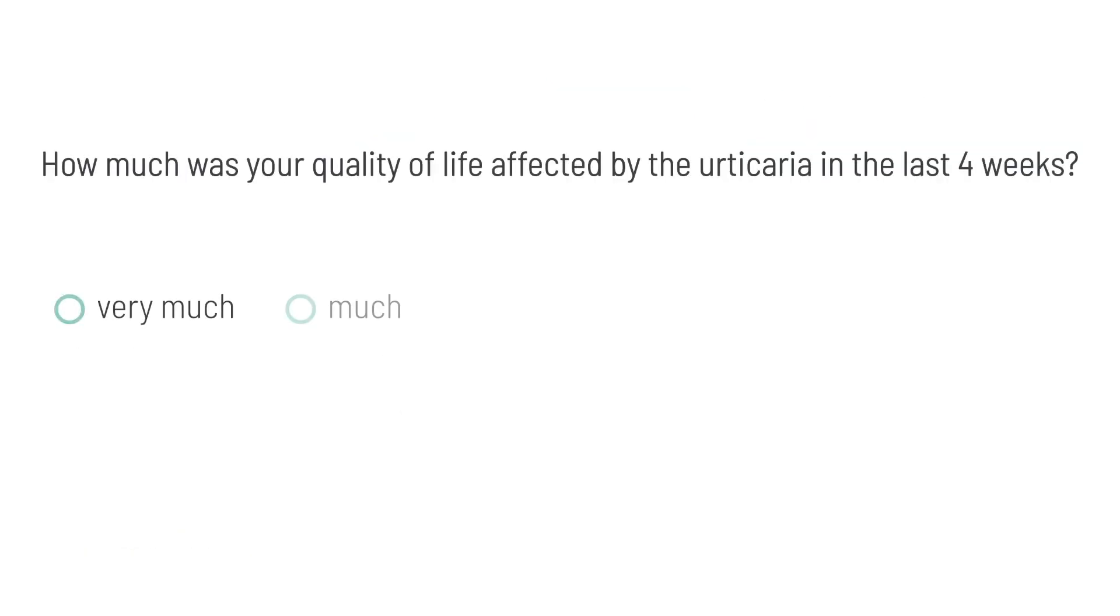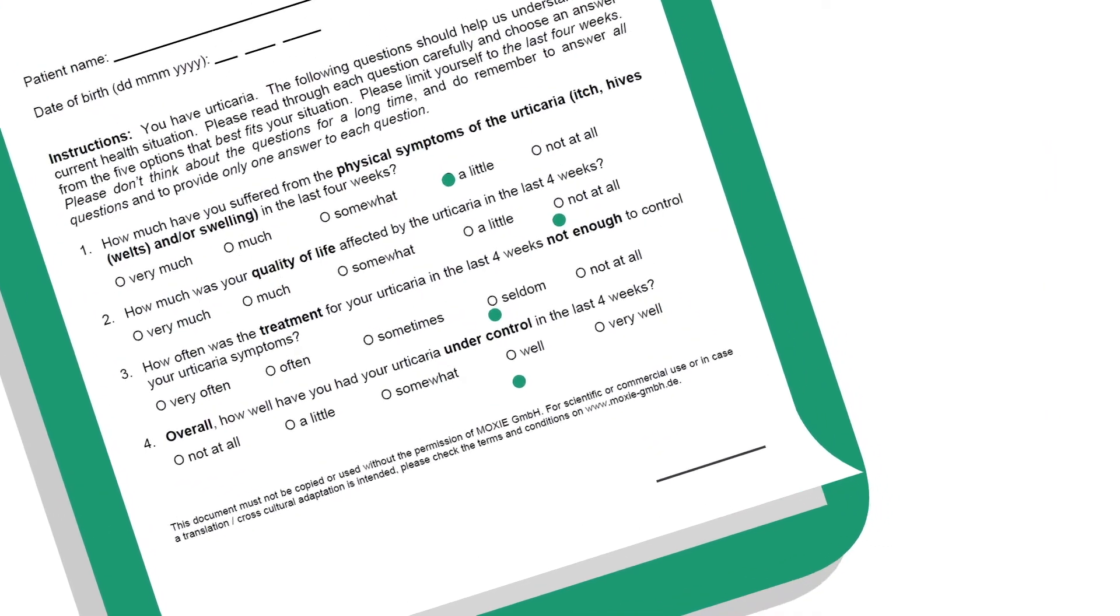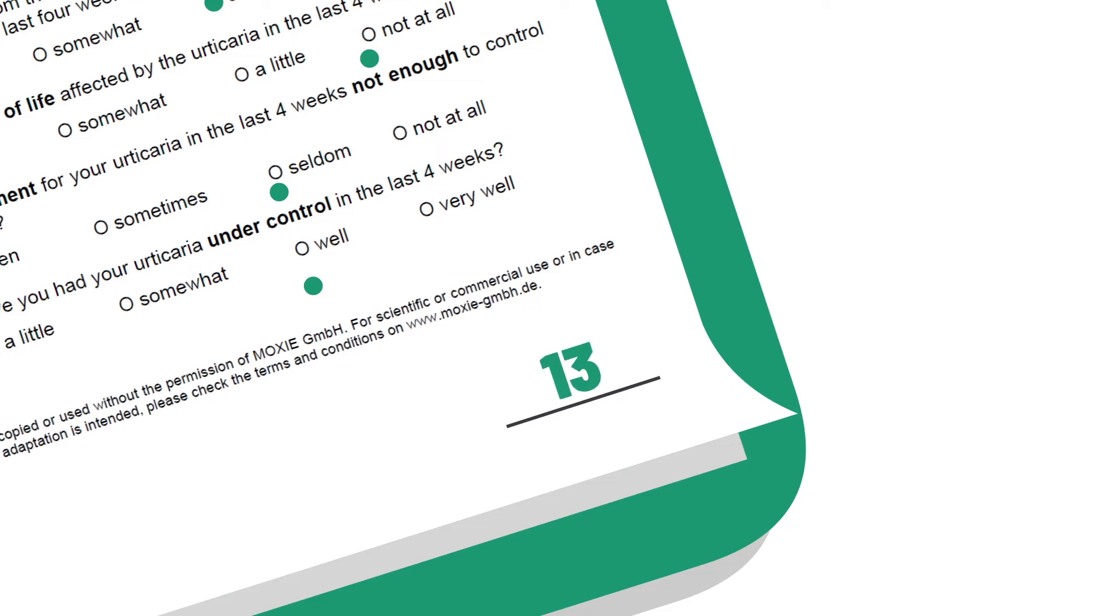Each response is assigned a value from zero to a maximum of four points. When adding the points together after answering, the so-called UCT score is obtained.